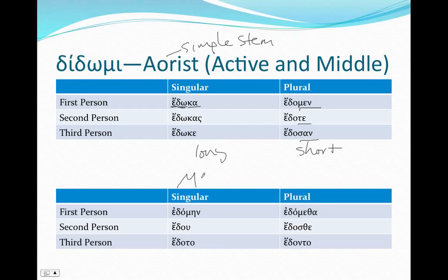But in the middle, we've got always our short stem and our regular endings: edomen, edoo. Here we actually do contract — the intervocalic sigma drops out. Edoto, edometha, edosan, edonto. Still athematic — we're still adding the endings just onto the stem, using that short simple stem, not the reduplicated stem.